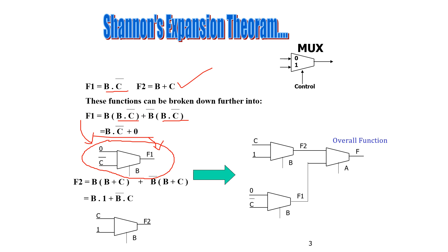F2 is equal to B into (B plus C) plus B̄ into (B plus C). Expanding: B times B is B, and B times C is BC, so we get B plus BC. B̄ times B becomes 0, and B̄ times C gives B̄C. The control is B. If B is 1, the input 1 is selected. If B is 0, C is selected. So F2 can be implemented using a MUX like this.